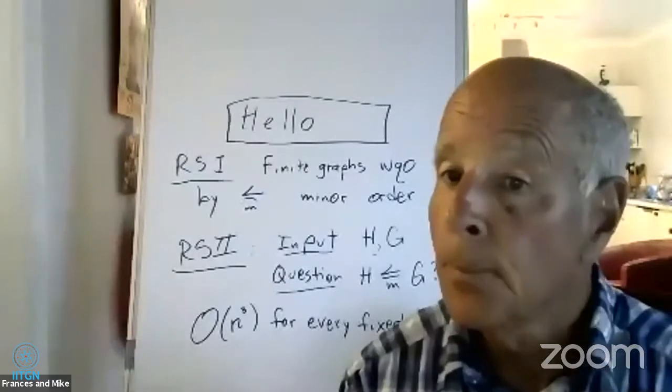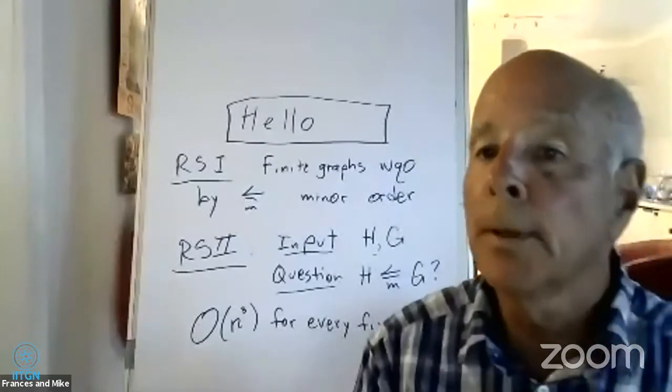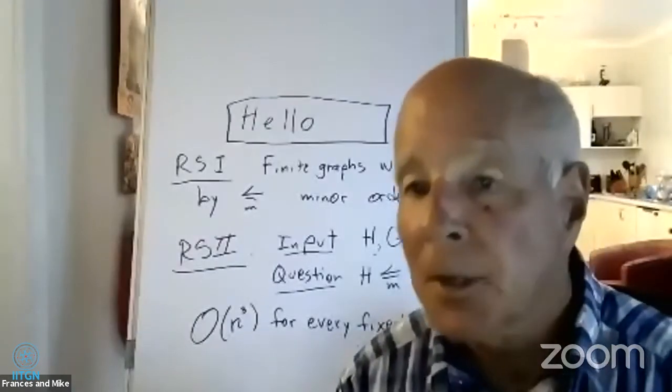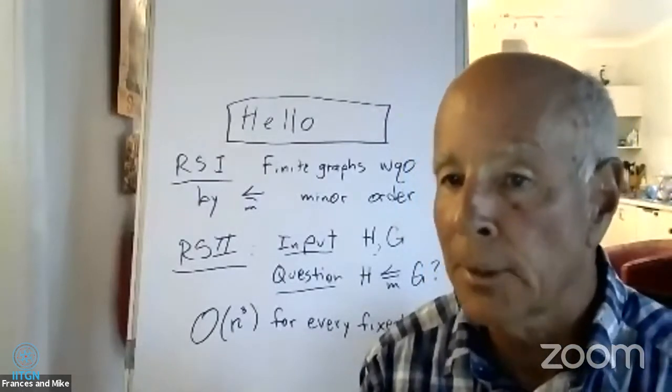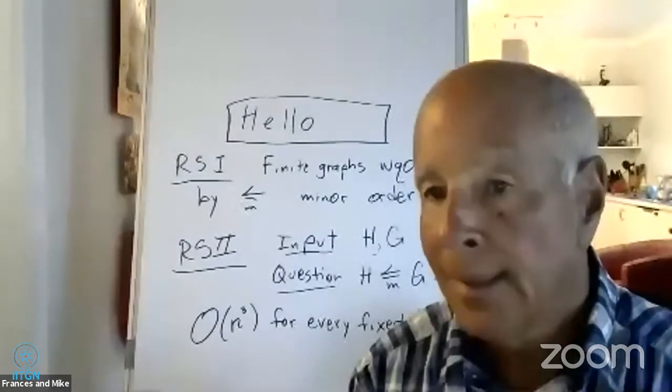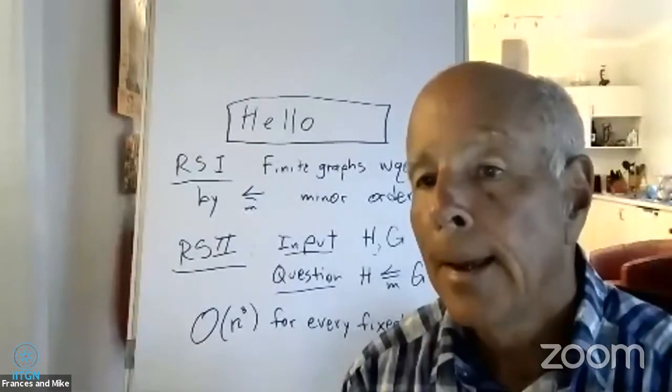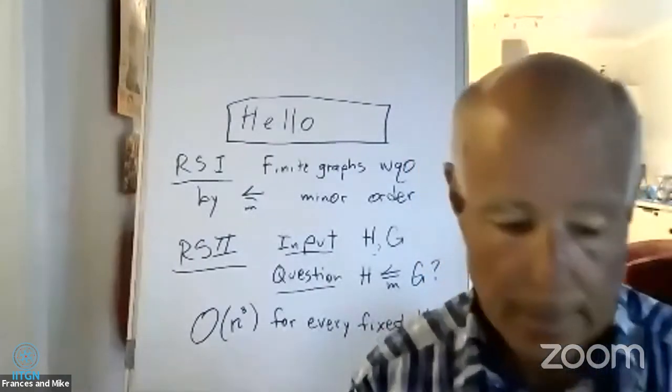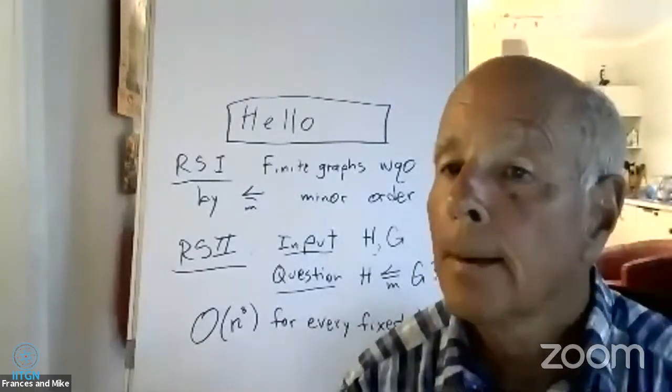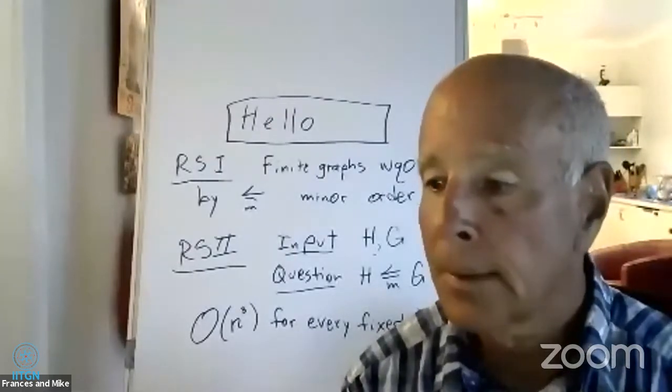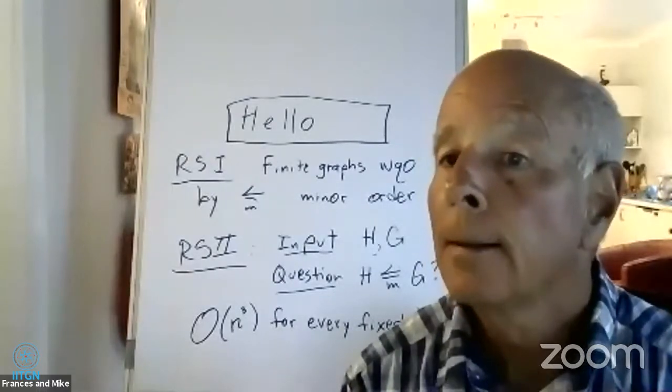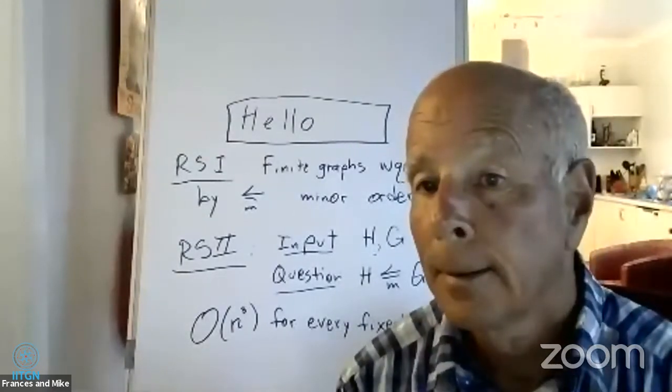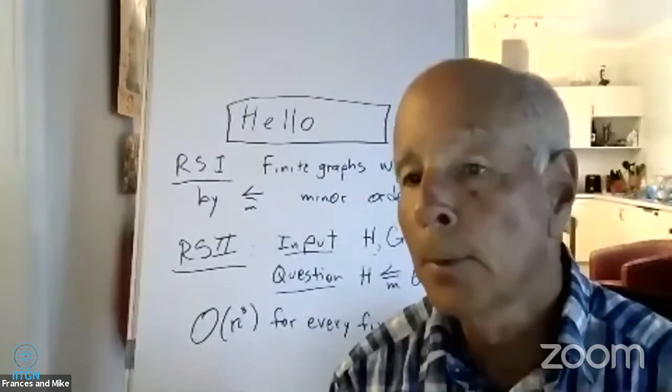NP completeness said we'll model everything in terms of decision algorithms, we'll have a notion of legal input, and we'll have a question. We'll look at when we have legal input of size n, how much time as a function of n does it take to be sure of answering the question correctly in the worst case, no matter what the legal input of size n is.